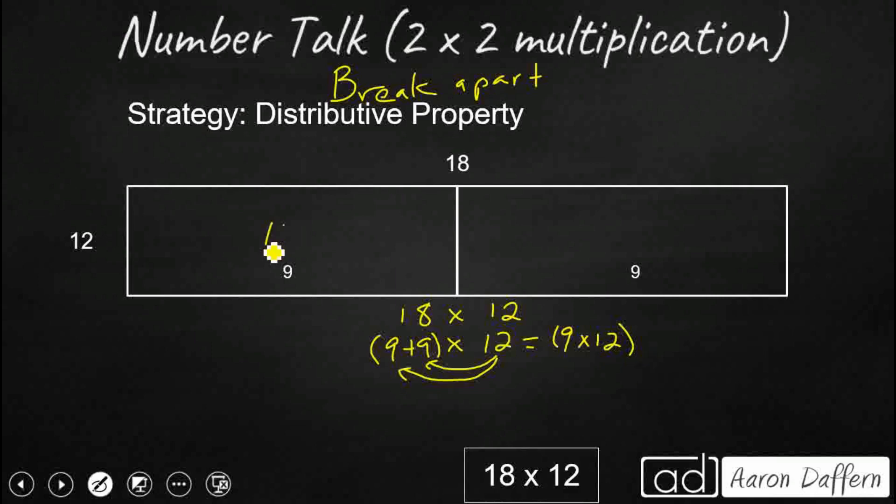Because 9 times 12, well that's a fact I should know, that's 108. And then I've got another 9 times 12. And that's a little bit easier than that 18 times 12. It's just breaking into 9 times 12 and 9 times 12. So 108 and 108 together make 216. Hopefully that's the answer that you got when you did it in your head.